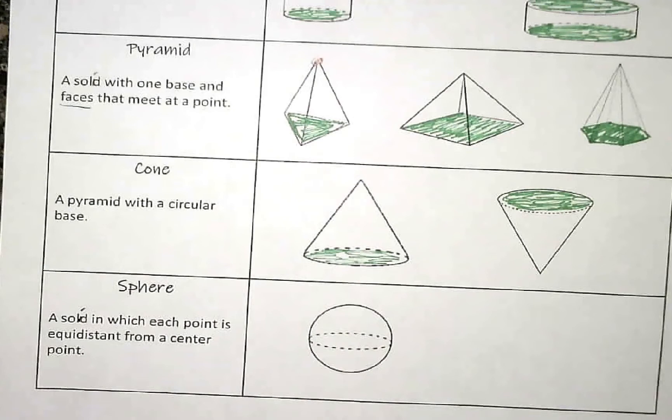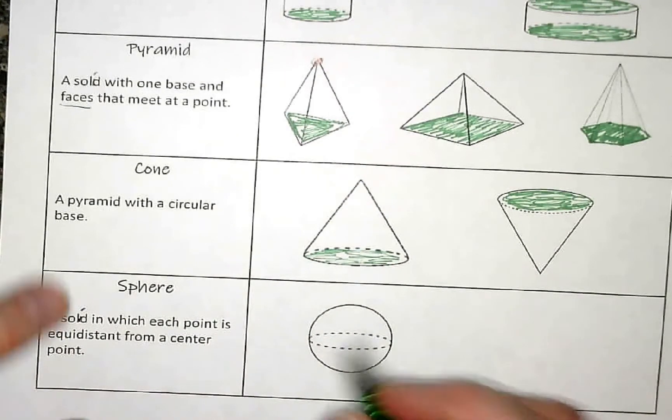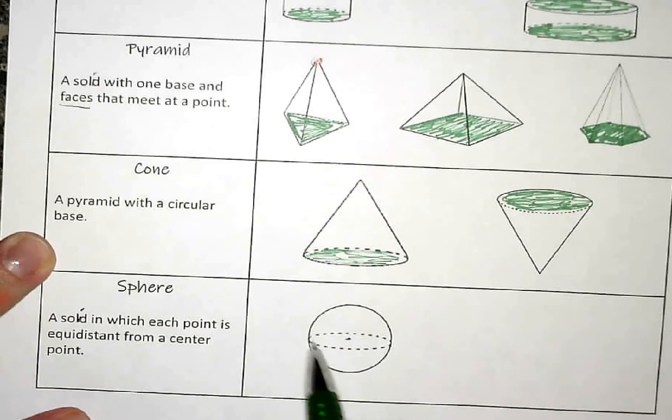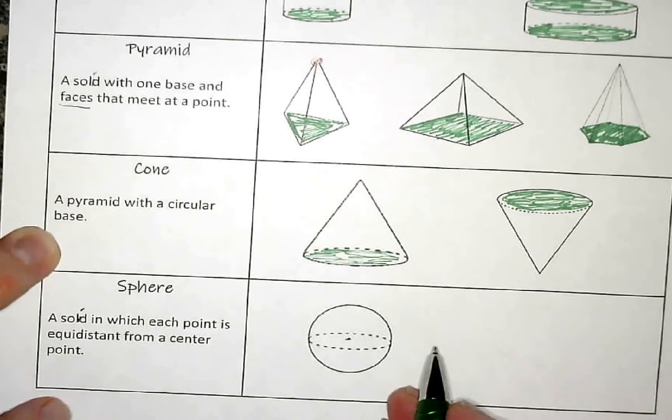A sphere is a solid in which each point is equidistant from a center point. So if I have a center point in here, if I just look at this dotted, that's a circle, right? So our definition of circle was all the points equidistant from that center point. A sphere just does it three-dimensionally.